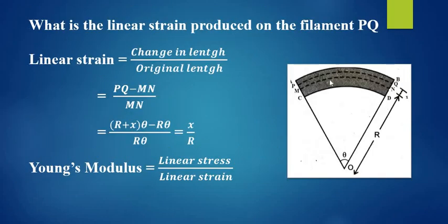Because above the neutral axis, the filaments are elongated. Therefore, the stress involved in this case is tensile stress. Below the neutral axis, the filaments are compressed. Therefore, the stress involved in this case is compressive stress.